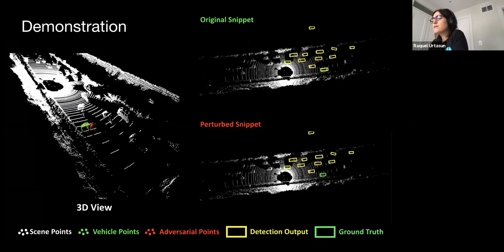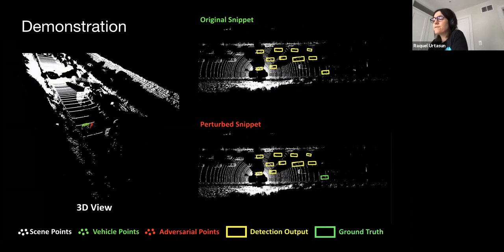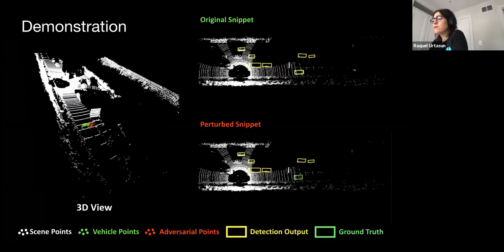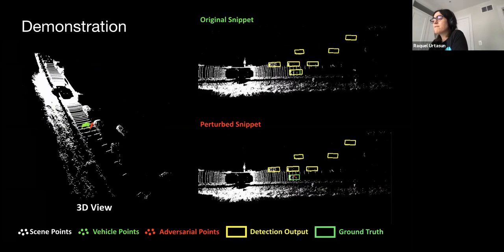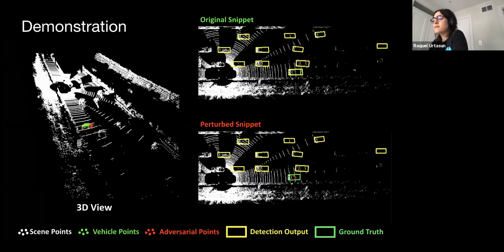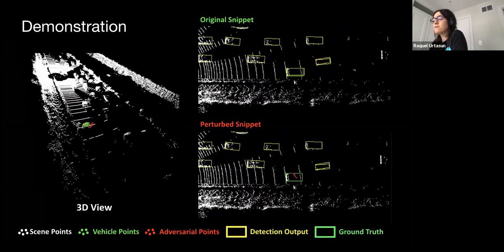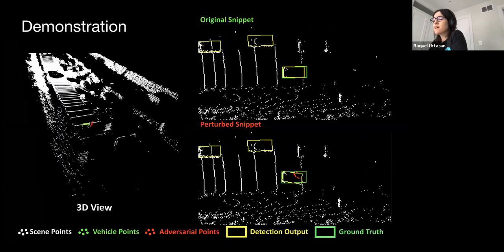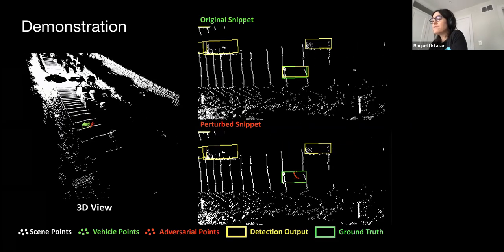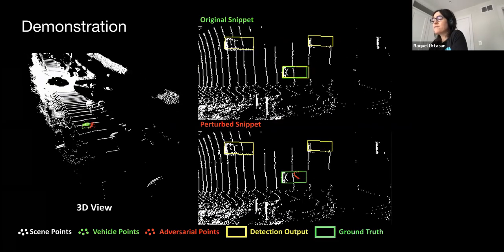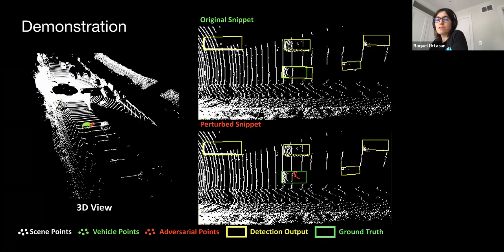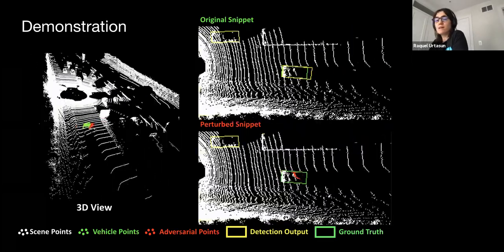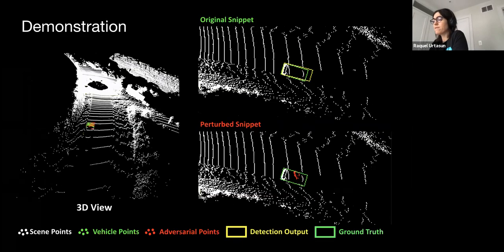Here is a qualitative demonstration of our attack. The same adversarial mesh is used throughout the whole video. Notice in the top right, in the original snippet, the target vehicle is consistently detected. However, on the bottom right, after adding the adversary, the vehicle is hidden in most frames — presenting a great threat to our self-driving vehicle.